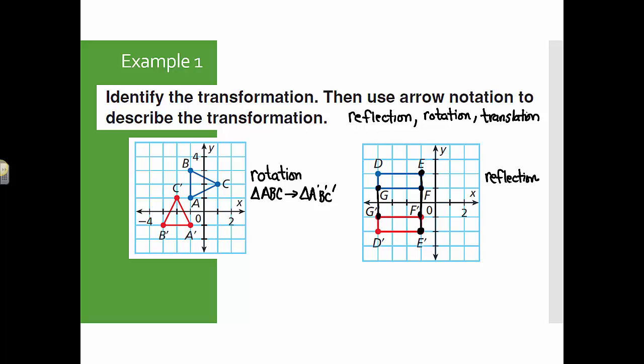And then my arrow notation, I would say D, E, F, G goes to D prime, E prime, F prime, G prime. And that's your arrow notation.